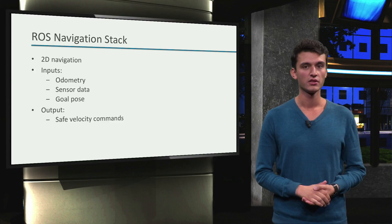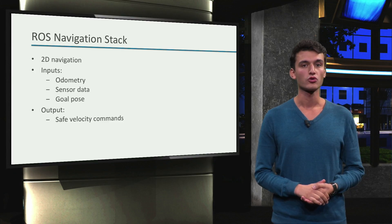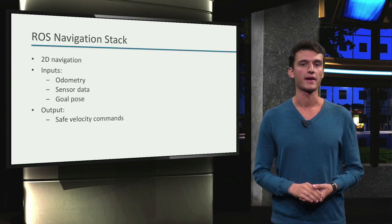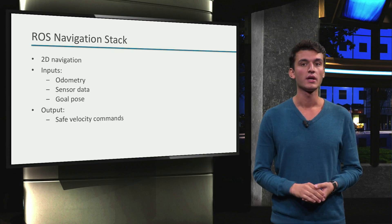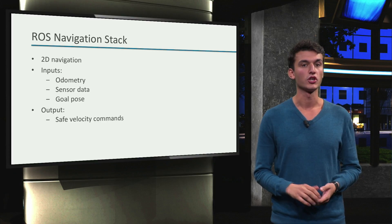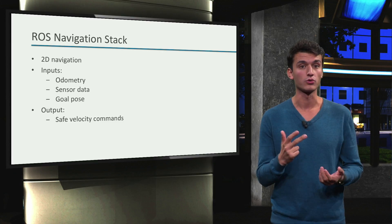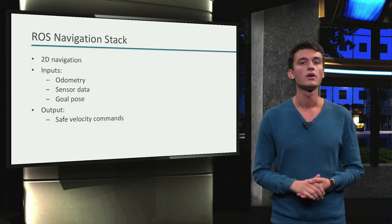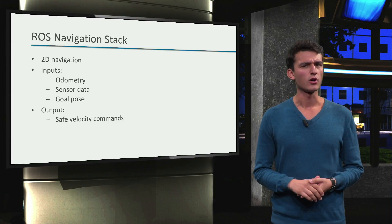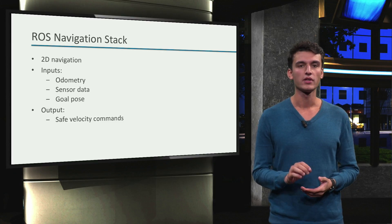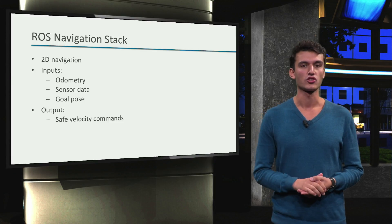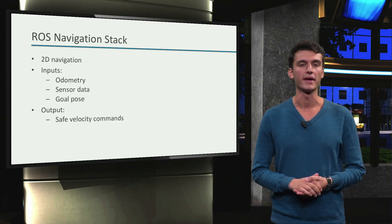To finally achieve navigation with our TurtleBot, we will use the ROS navigation stack. It's meant for two-dimensional navigation. As input, it takes information from the odometry, sensor streams, and of course, a goal. What does it output? Well, safe velocity commands that are sent to the mobile base.